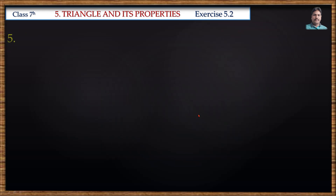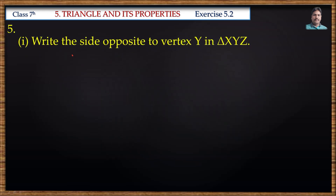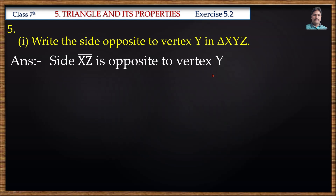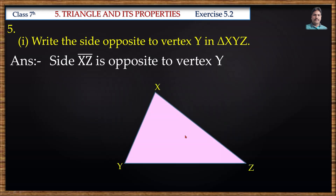Fifth problem: Write the side opposite to vertex Y in triangle XYZ. In triangle XYZ, the side opposite to vertex Y is XZ. See this picture — this is vertex Y and the opposite side is XZ.